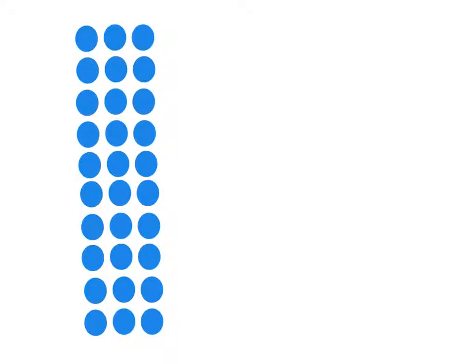The array picture allows us to derive new multiplication facts from old multiplication facts really easily. So what I've got here in this picture is I have got 10 rows of 3, and that's very easy to see is 30.